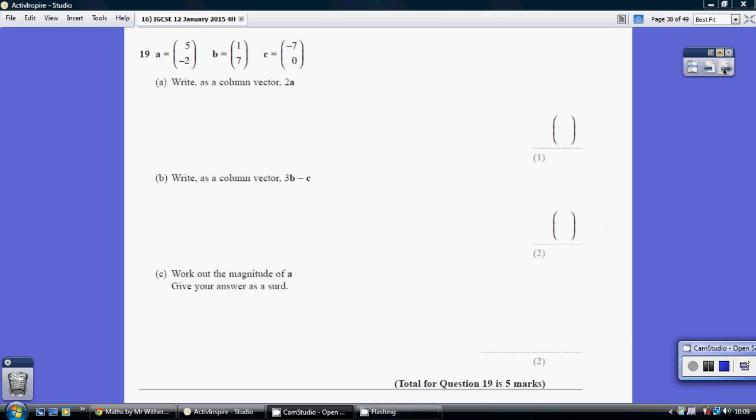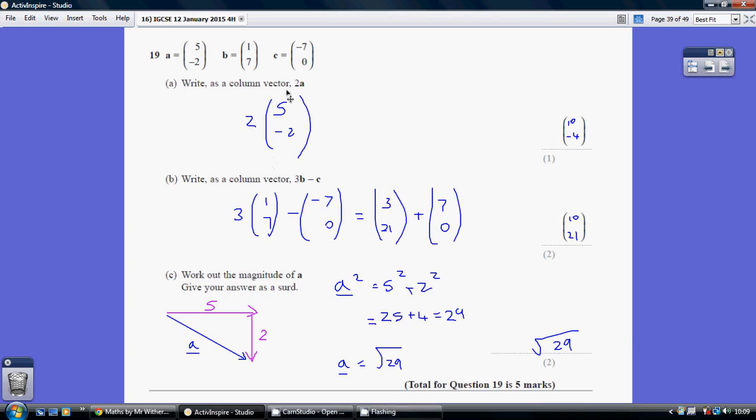Question 19. So, 2 lots of A - we just quite simply multiply both these terms by 2. So 2 lots of 5 and 2 lots of minus 2, giving us 10 minus 4.